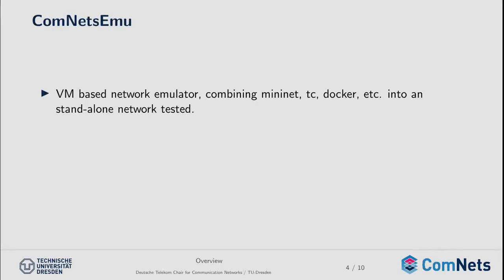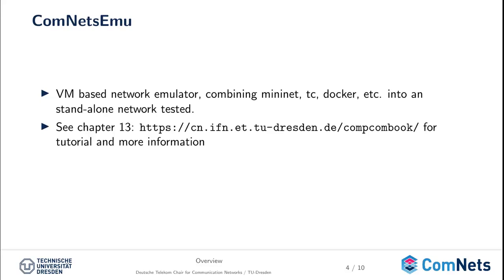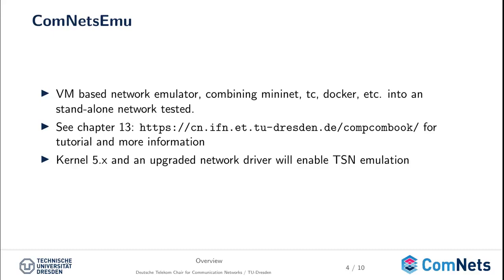In the next tutorials, we will use the ComNets emulator, which you should know from other videos. It is basically a VM-based network emulator combining Mininet, Traffic Control, Docker, and other tools into a standard known network testbed. If you want more information on how to set up this emulator, take a look at chapter 13 and the corresponding video. To get the TSN emulation running in the ComNets EMU, we upgraded the kernel to version 5.2, which includes an update to the network packet structure enabling the operating system to determine the transmission timestamp. With this transmission timestamp planning, you are able to implement the time-aware shaper.